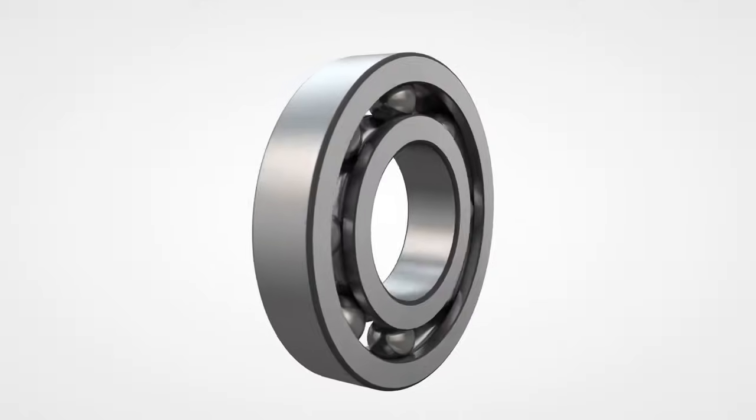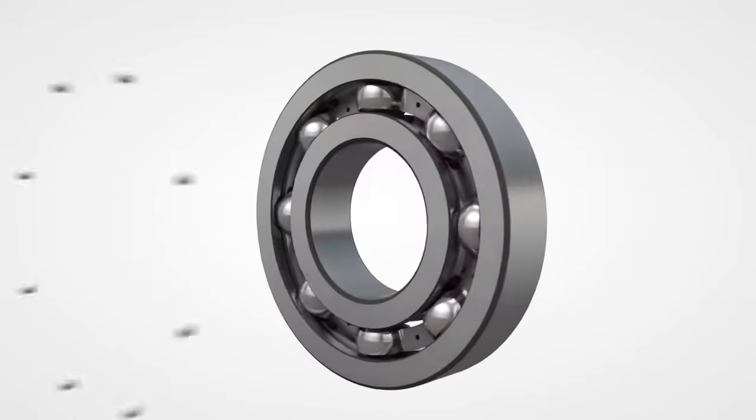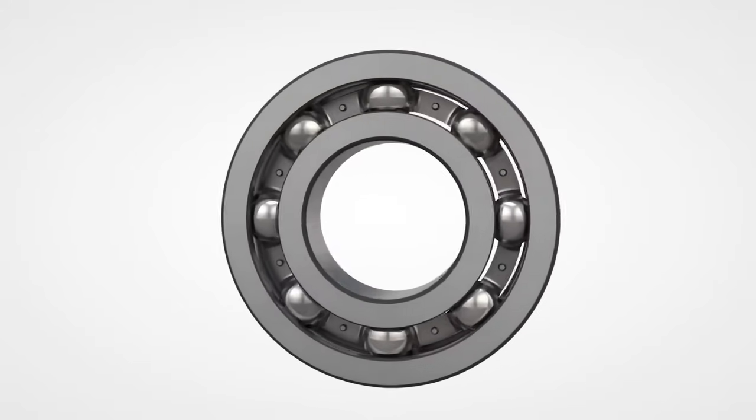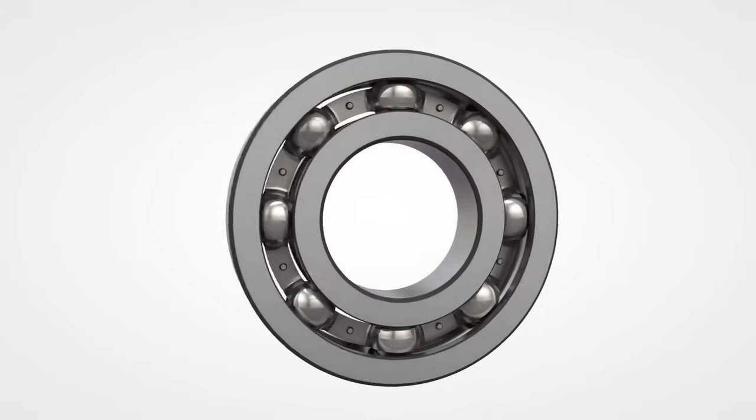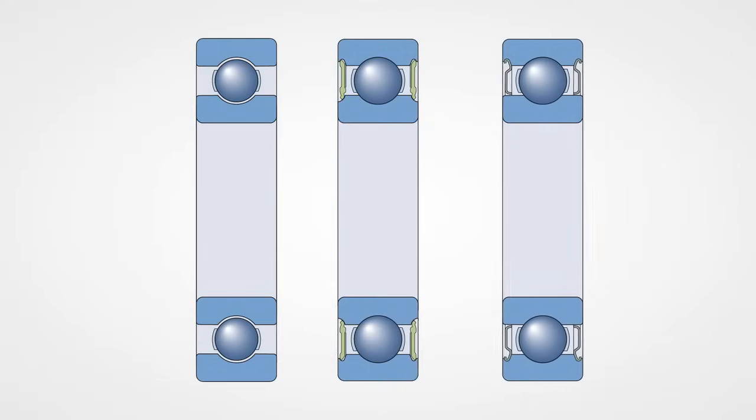It consists of an inner and outer ring and a set of balls separated by a cage. This bearing can accommodate radial and a combination of light radial and axial loads. The bearing can be supplied in open condition or with one or two seals or metal shields.